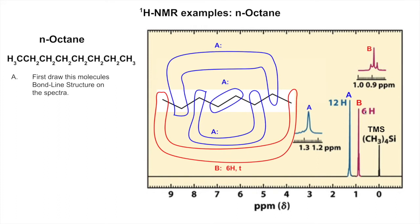Next up, there's a four-hydrogen sextet with a question mark, because the three neighbors on one side are not the same as the two neighbors on the other side. So these hydrogens see three neighbors on one side and two different neighbors on the other - that's five neighbors total. N plus one is five plus one equals six, so it's a sextet with a question mark.